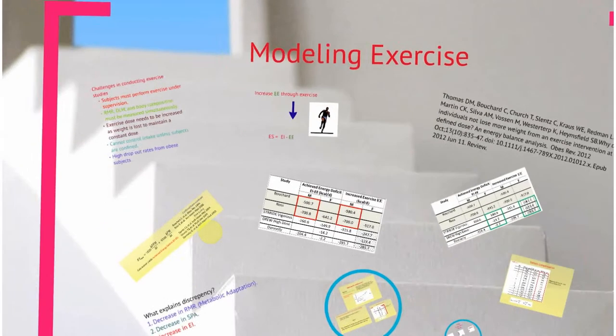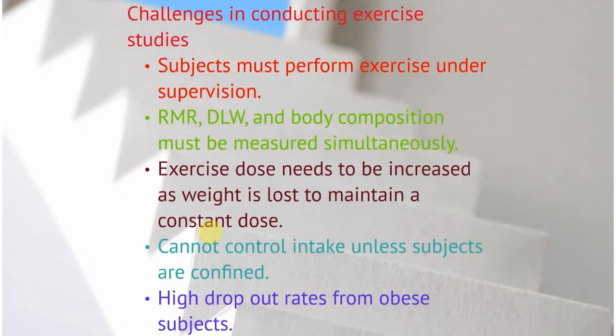Why is exercise different? First of all, the data is much less. Subjects in exercise interventions must perform exercise. You have to make them do something. Unlike a dietary intervention where you tell them don't eat something, you actually have to force people to come in and do something, and that's really difficult to do. If you start measuring things on top of them coming in and burning calories on the treadmill, you also have to measure resting metabolic rate, doubly labeled water body composition. They should be measured simultaneously for energy balance models, which is difficult.